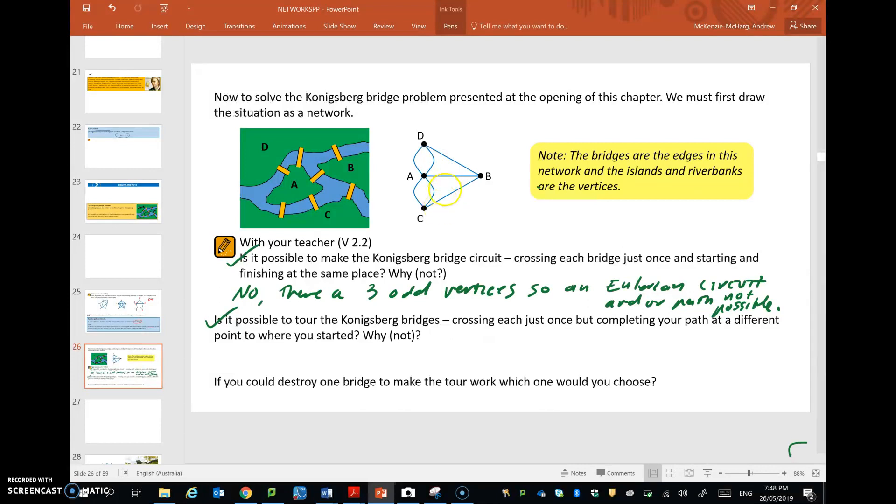It turns out you could destroy lots of different edges and achieve this. For instance, if we got rid of this edge, now it's only C and D that are odd. So a path is possible. So look, there's a bunch. All you've got to do is destroy one bridge and make it so that there are two odd vertices.